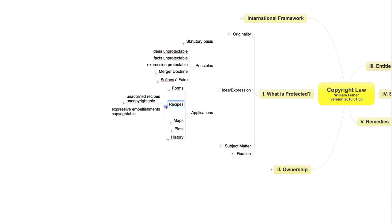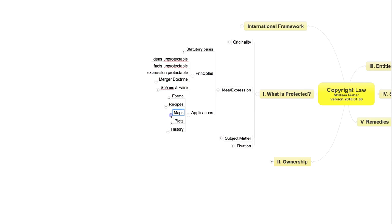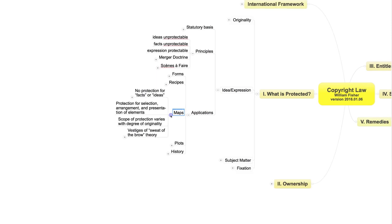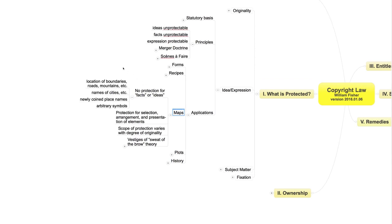Another example. Maps have been protected by copyright law for a long time. But not all components of maps enjoy copyright protection. For example, the location of roads, mountains, rivers, and political boundaries, and the names of cities and towns are all excluded from copyright protection. Thus, you can copy such things from someone else's map onto your own without running afoul of the law.